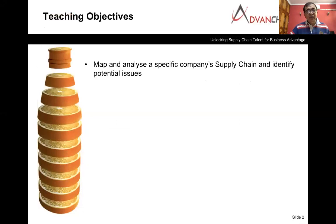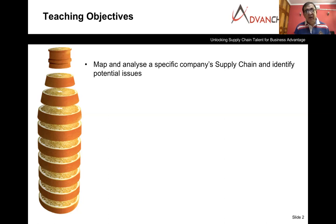The objectives of the teaching case are, first and foremost, the student should be able to map the end-to-end supply chain on a piece of paper and superimpose this map with various pieces of information. They should be able to see in one shot how the company's supply chain is structured, how the various links interface with each other, and therefore what are the potential risks the company is exposed to.